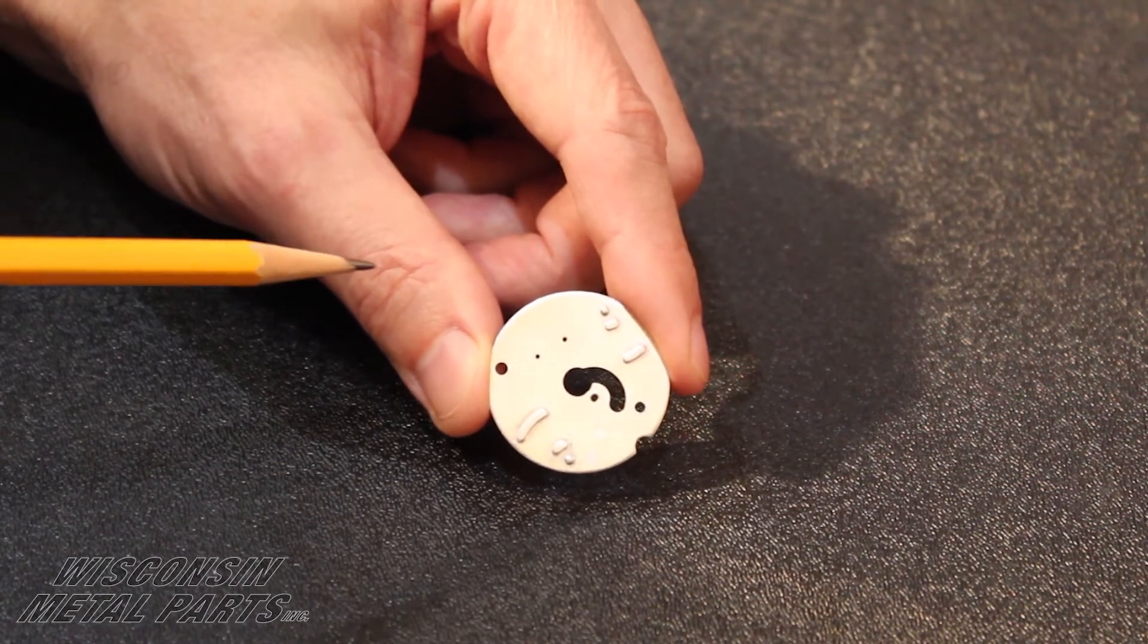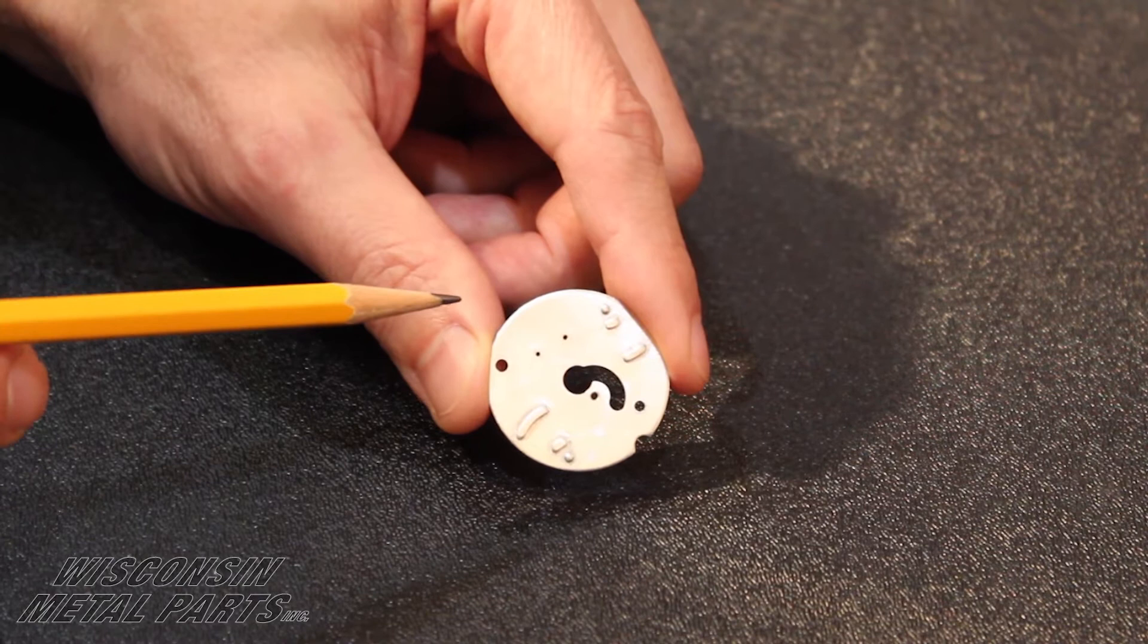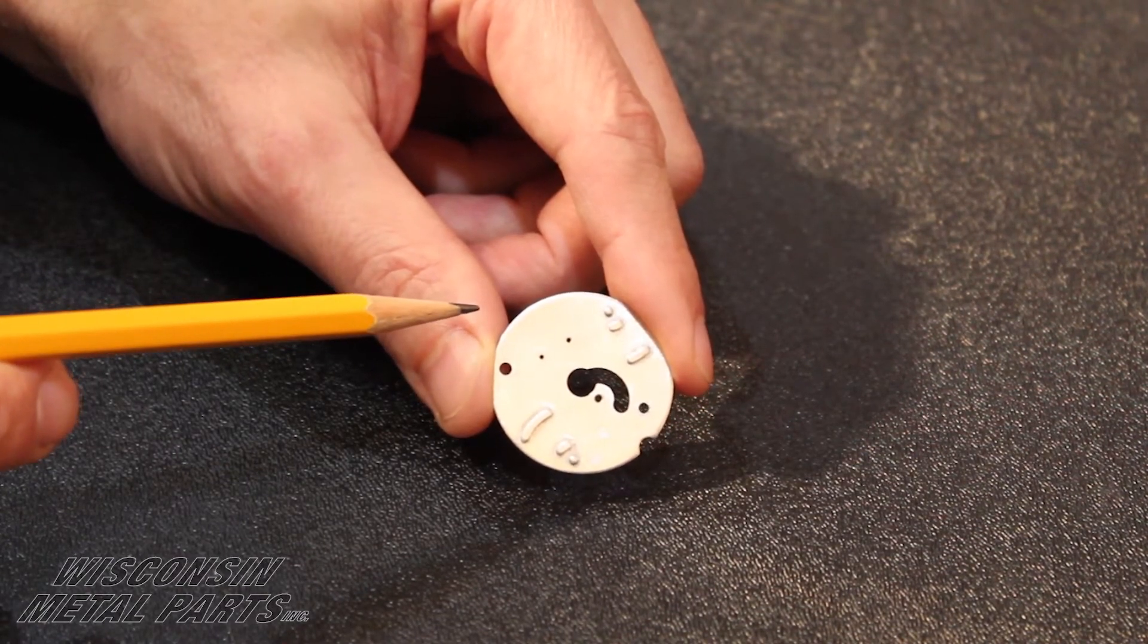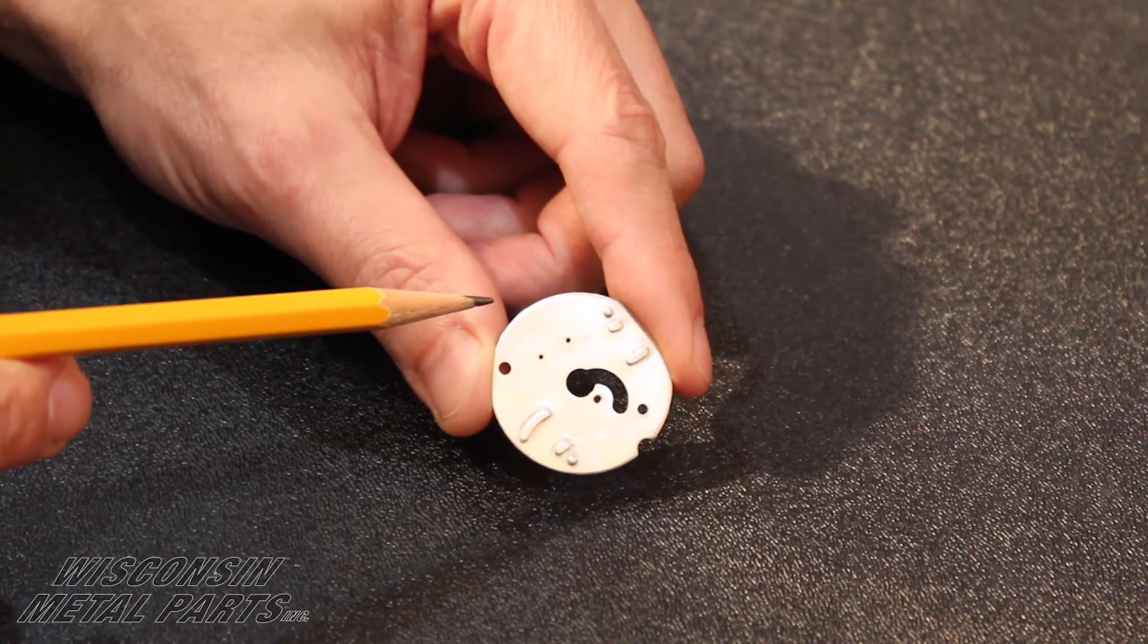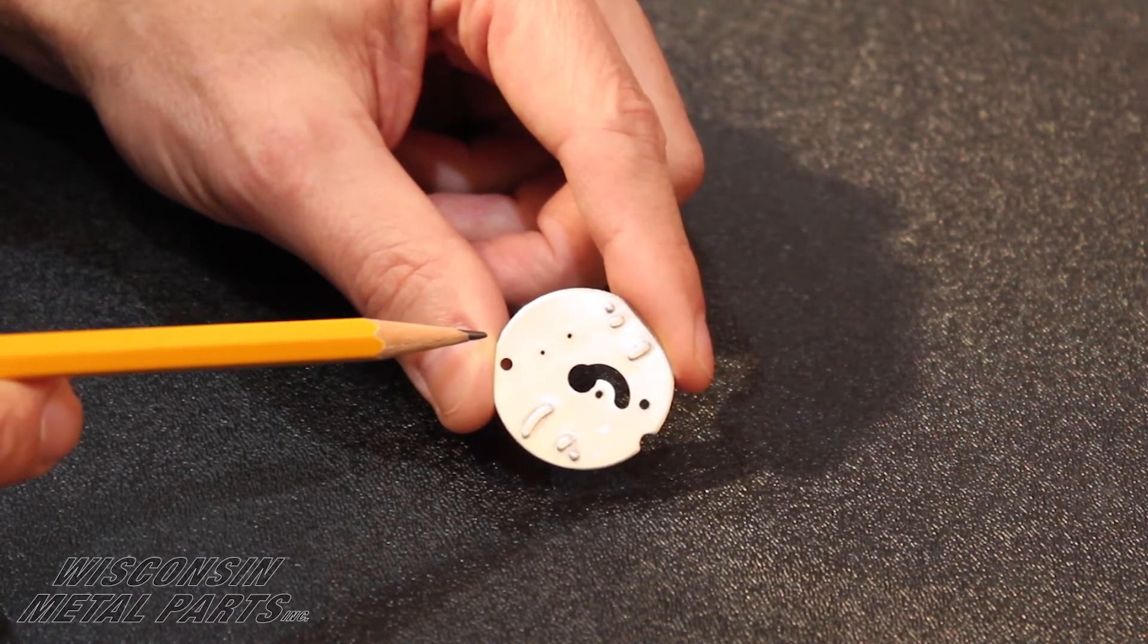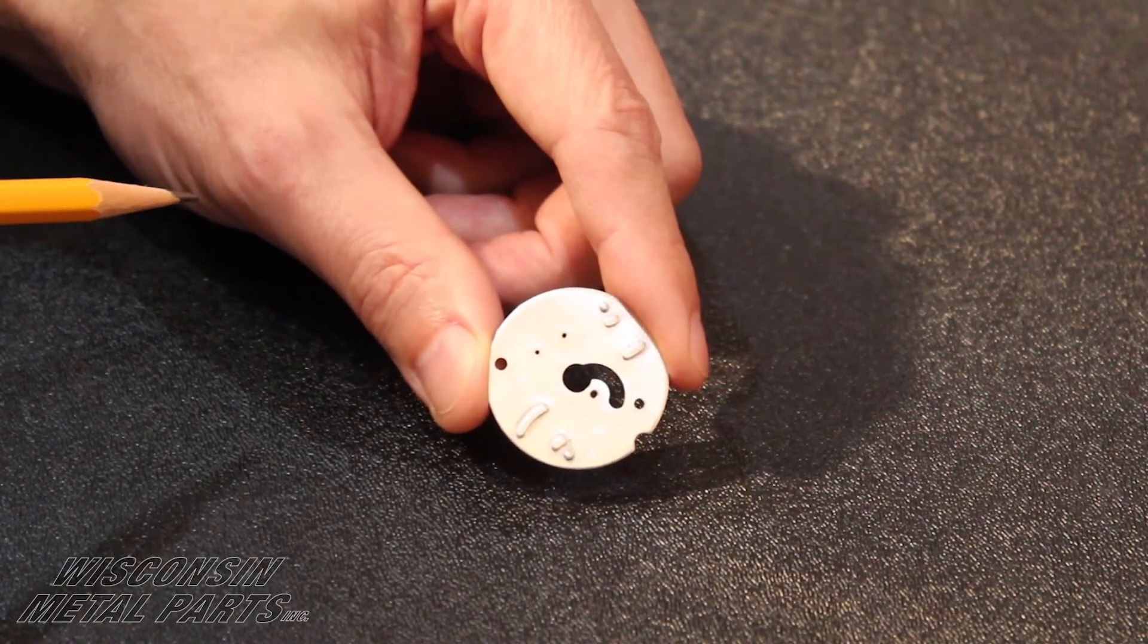This particular tool we designed and built this stamping die and when it runs we also have some in-die checking features that check to make sure that holes are in it and a few other things are checked right in the run of the press so that we have conforming parts coming out the other end.